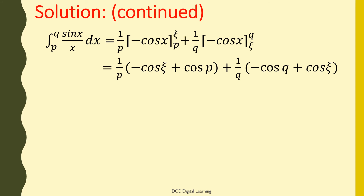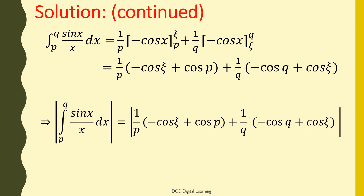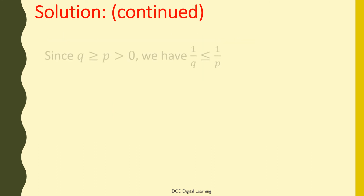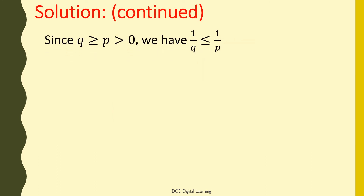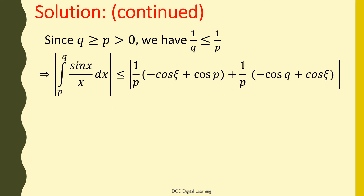Plus (1/q)(-cos q + cos η). This implies |∫sin(x)/x dx from p to q| equals the absolute value of (1/p)(-cos η + cos p) + (1/q)(-cos q + cos η). Since q ≥ p > 0, we have 1/q ≤ 1/p, which implies |∫sin(x)/x dx from p to q| ≤ |(1/p)(-cos η + cos p) + (1/p)(-cos q + cos η)|.